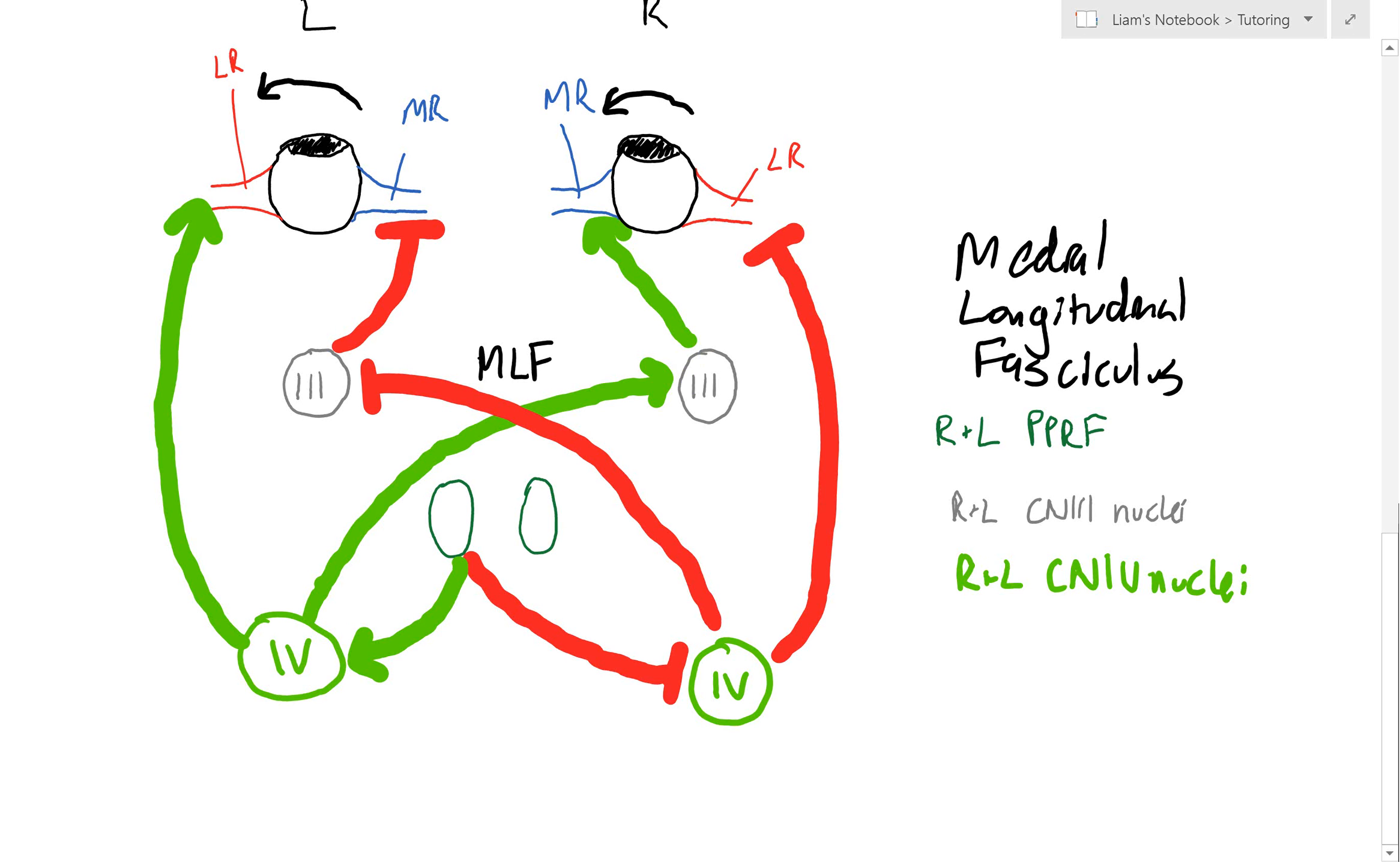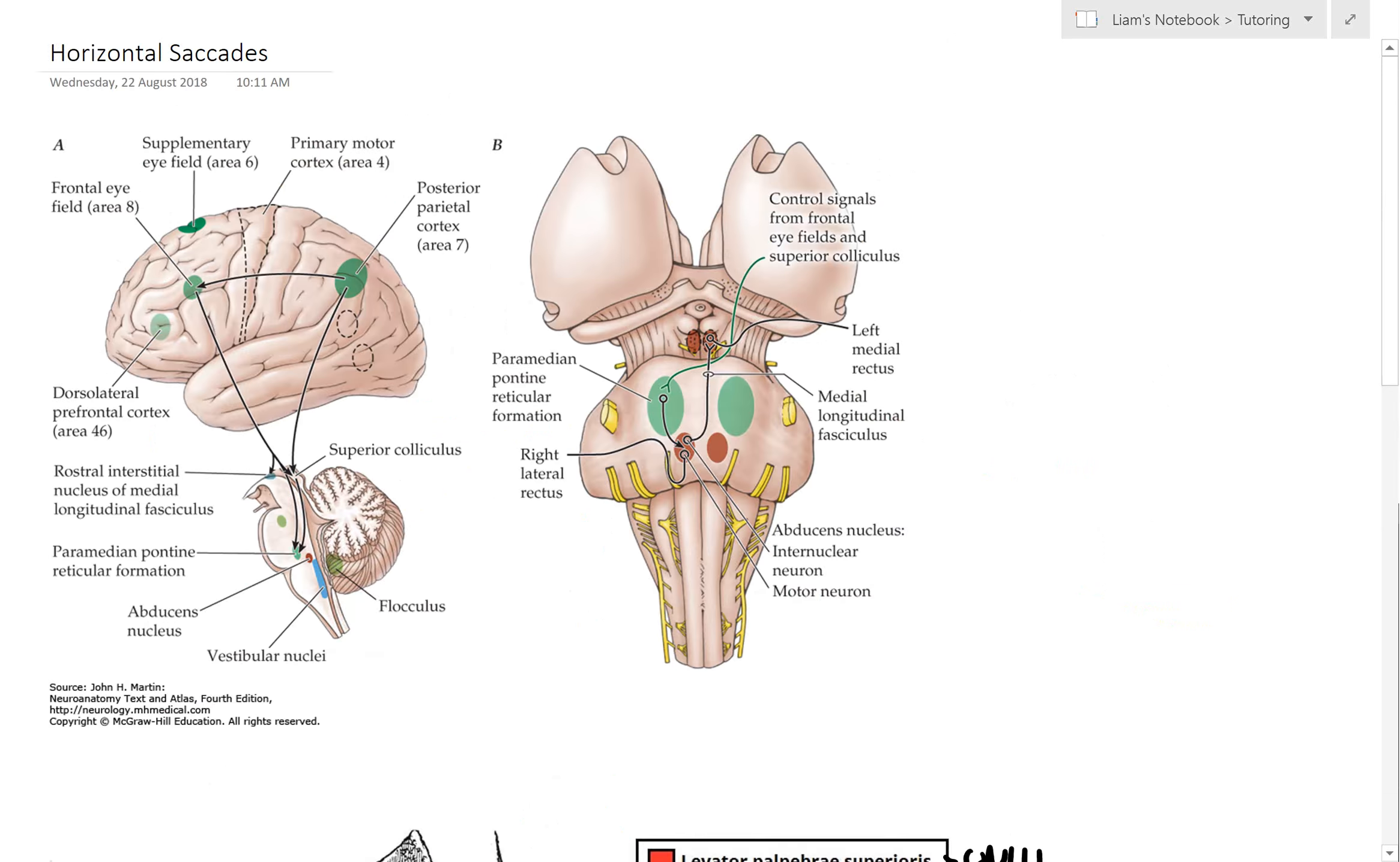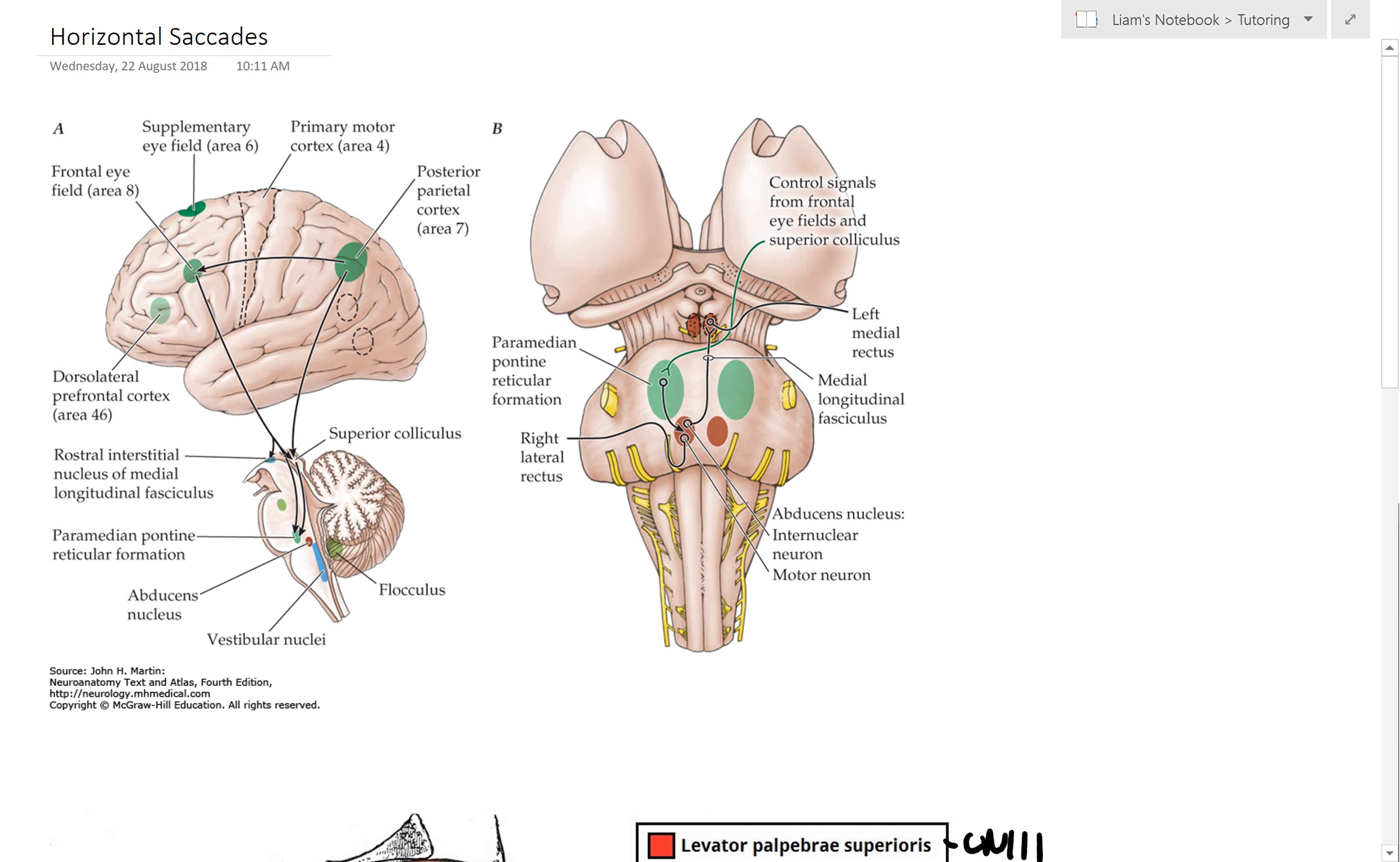If we then move back up to this diagram here, hopefully now some of these terms will make more sense. We've got the right lateral rectus nuclei, our PPRF—the right lateral rectus communicating with the left medial rectus through the MLF. Hopefully this makes more sense now.